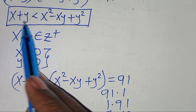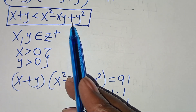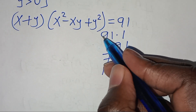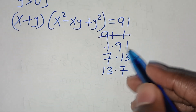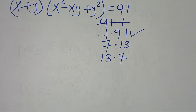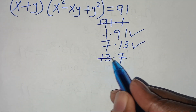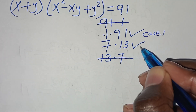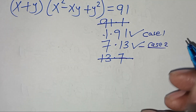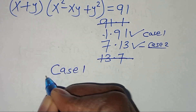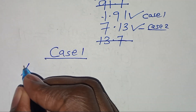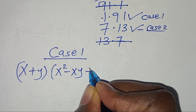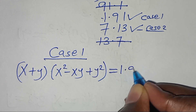Since x plus y must be greater than x squared minus xy plus y squared, the pair 91 times 1 violates the condition, and 13 times 7 also violates the condition. So we have two valid cases: Case 1 with the pair 1 times 91, and Case 2 with 7 times 13. In Case 1, we have (x + y)(x squared minus xy plus y squared) equals 1 times 91.